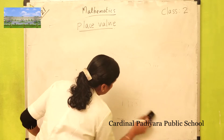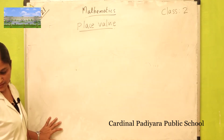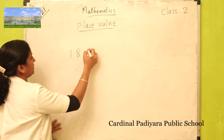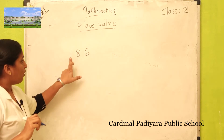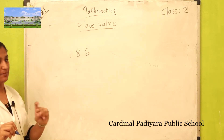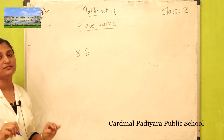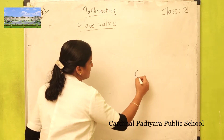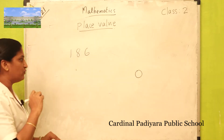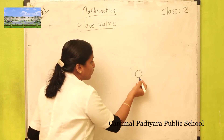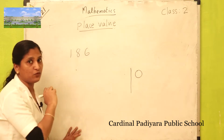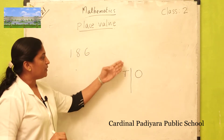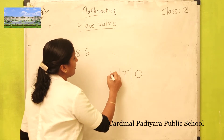In a three-digit number there are three places. Look at this number: one hundred eighty-six. It's a three-digit number — one, two, three digits. Place value starts from the right side. First place is ones, then before ones is tens, then before tens is hundreds.